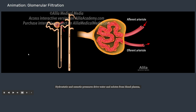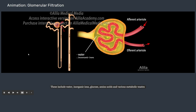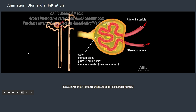Hydrostatic and osmotic pressures drive water and solutes from blood plasma through a filtration membrane into the capsular space of the nephron. The filtration membrane acts like a sieve, allowing only small molecules to pass through. These include water, inorganic ions, glucose, amino acids, and various metabolic wastes such as urea and creatinine, and make up the glomerular filtrate.